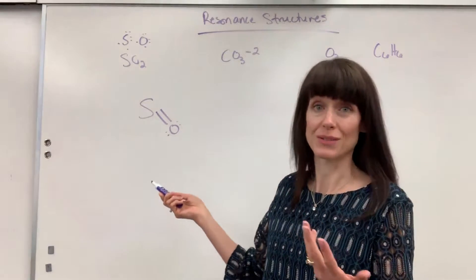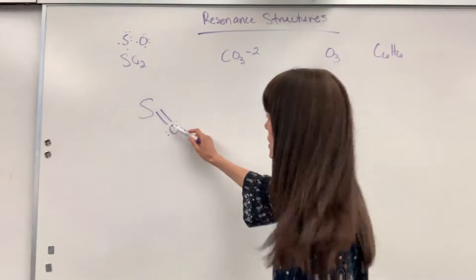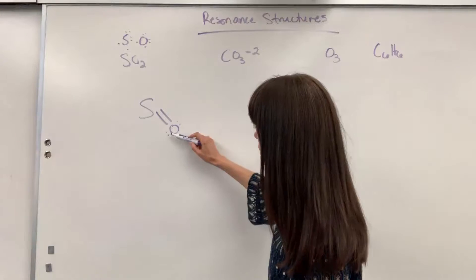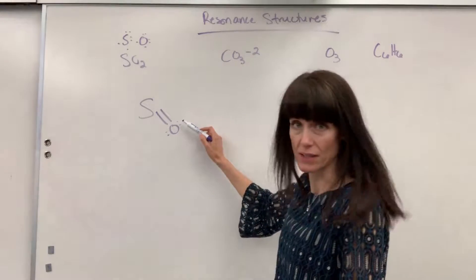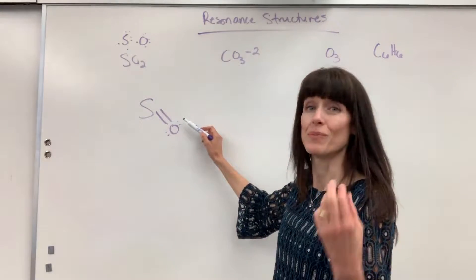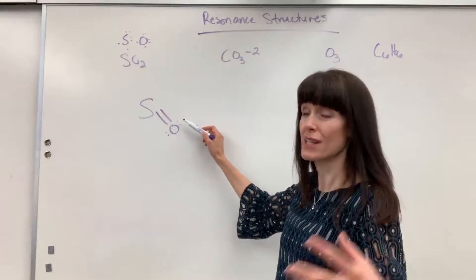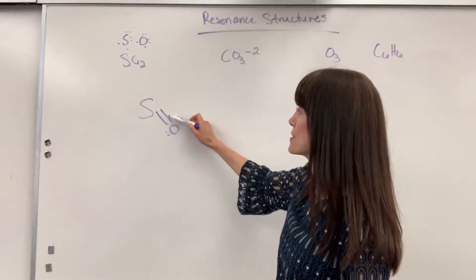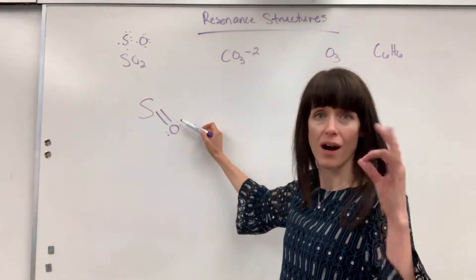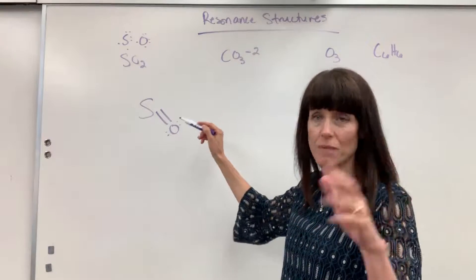This oxygen is good — it shared two electrons, giving it one, two, three, four, five, six valence electrons. But because we're sharing electrons, it senses two, four, six, eight. Octet done.